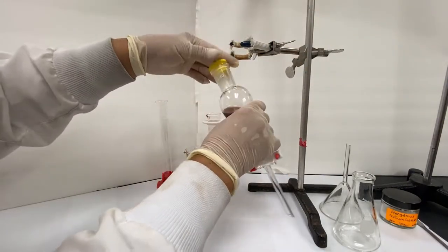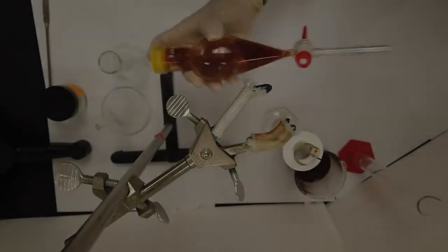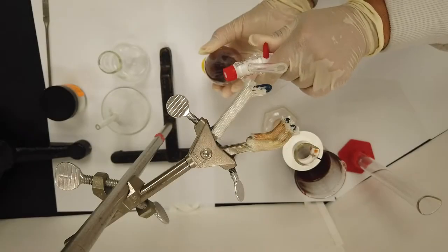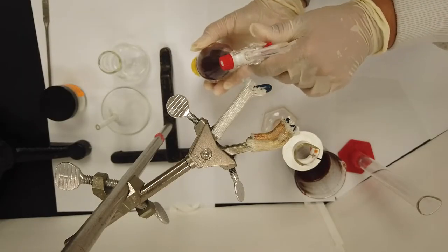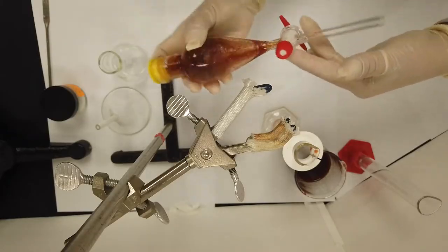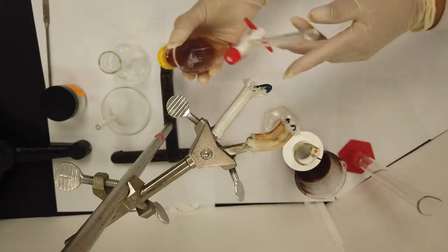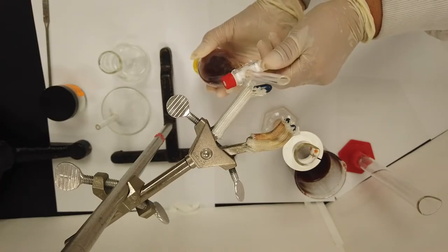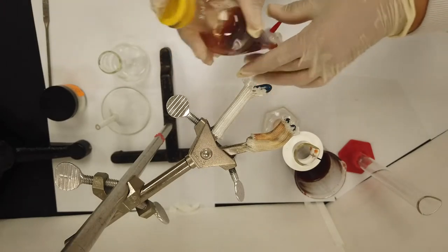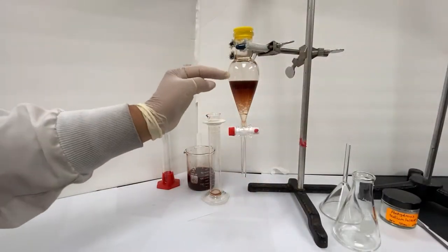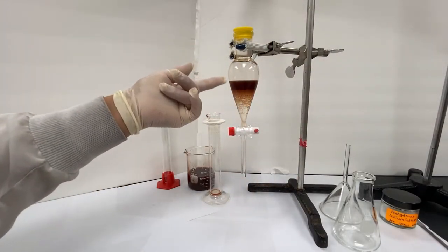Turn the funnel over and slowly open the valve. As you can hear, shaking causes a buildup of pressure inside the funnel, and venting it allows the excess gases to escape. You may repeat this several times, which may lead to a higher final yield. Once you're satisfied, you can replace the funnel on the stand and wait for the layers to separate.